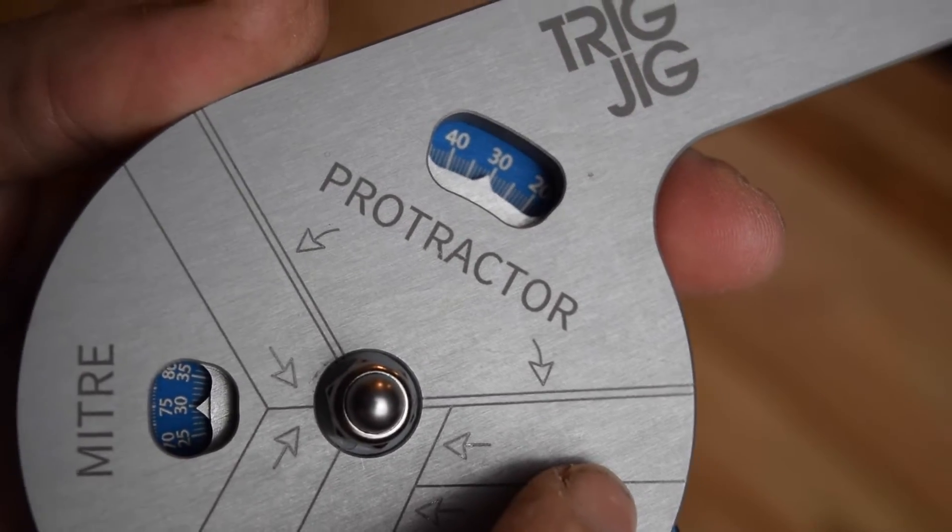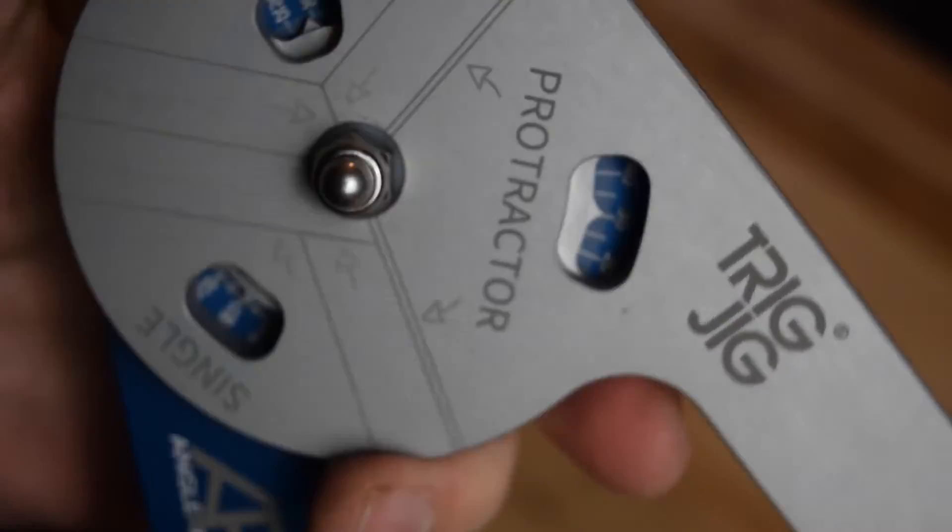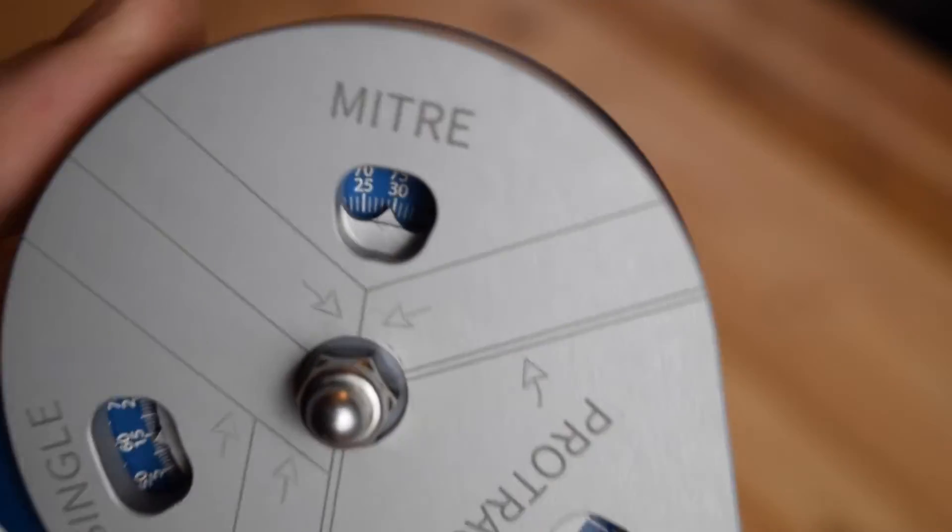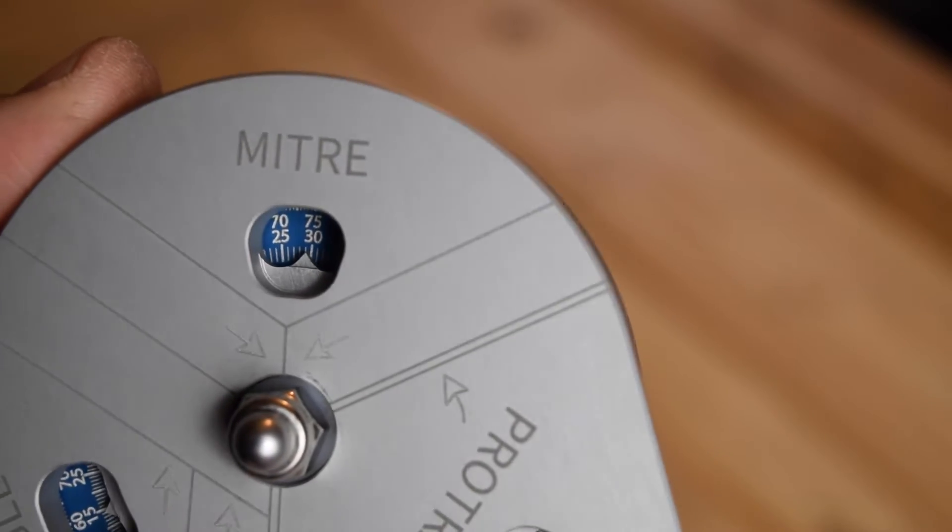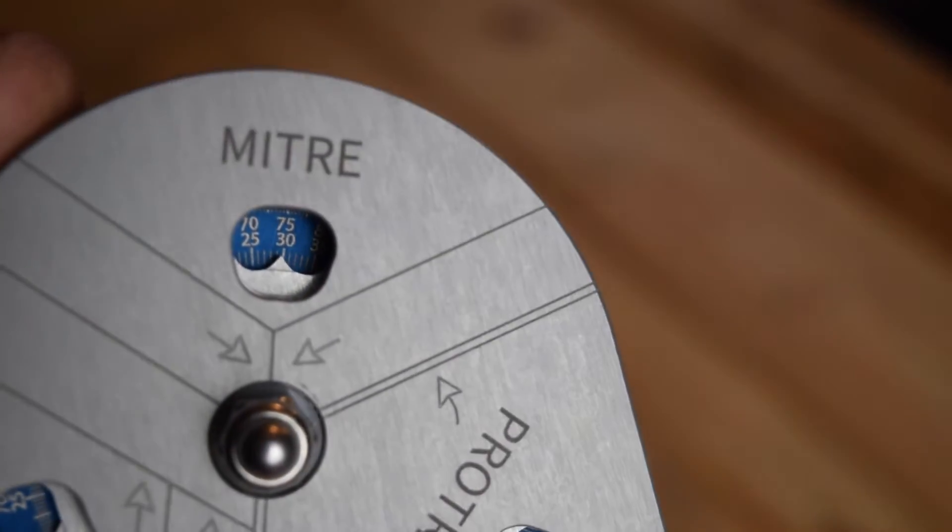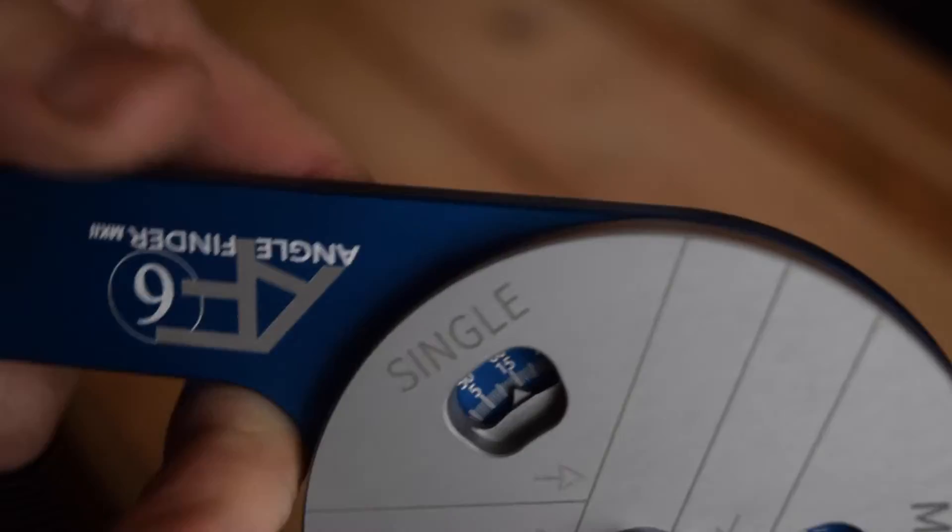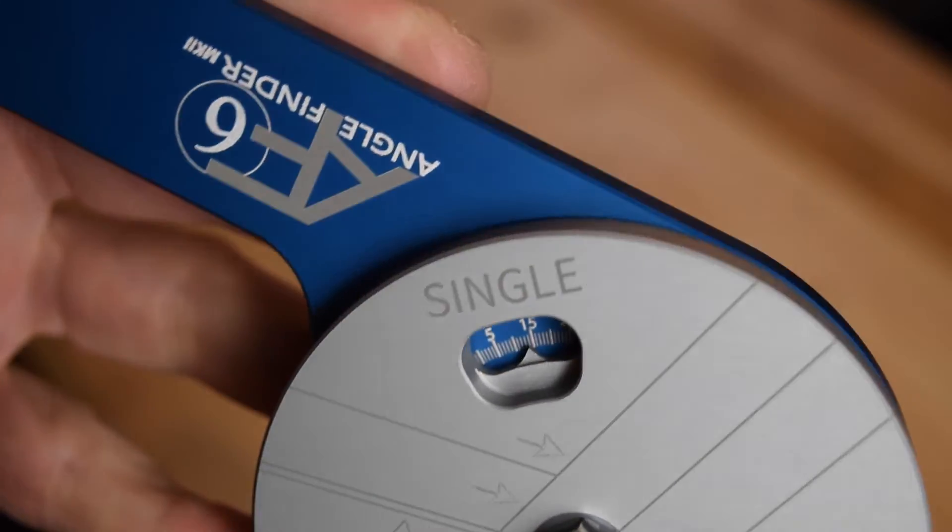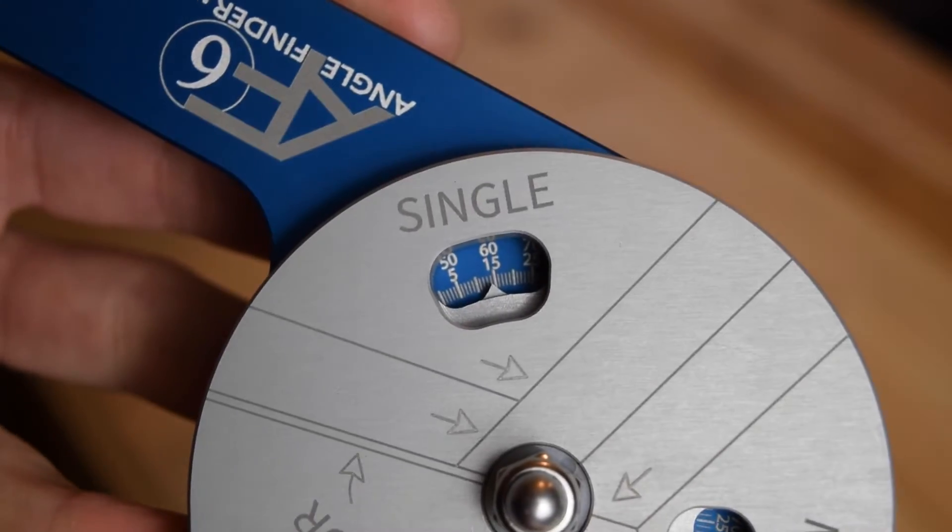This is something that's actually really useful and it's noticeably missing from many analogue protractors. The mitre angle is the setting you use on your mitre saw when cutting and joining two lengths of material, and the single is the mitre saw setting for cutting a single butt joint. There are diagrams on the tool that demonstrate this.